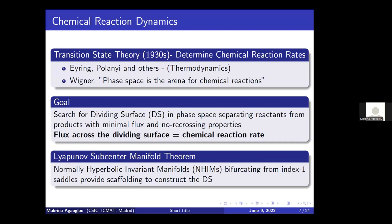In chemical reactions, phase space plays a fundamental role in the determination of reaction rates. Transition state theory provides the framework to study reaction rates, originally developed in the thermodynamic framework by Eyring, Polanyi, and others. It was Wigner who later advocated that phase space is the arena where dynamics really takes place. Reaction rates can be estimated from the flux of trajectories across a dividing surface — a manifold that is non-recrossing and minimizes the flux of trajectories, constructed to separate reactants from products in phase space.